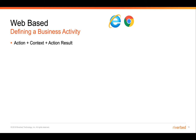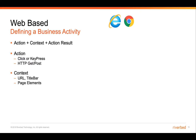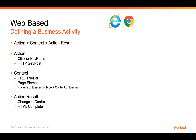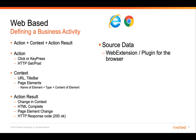We can also define web-based business activities in browsers such as Internet Explorer or Chrome. A similar construct is used: an action, a context, and an action result. The action can be a click, key press, or an HTTP GET or POST. The context uses things like the URL, title bar, and page elements such as the name, type, and content of the element. The action result can be things like a change in context, an HTML complete response, a page element change, or an HTTP response code. The source data is primarily a web browser extension or plugin that lets us see what's happening within the browser, looking at the WinSoc layer and UX events.